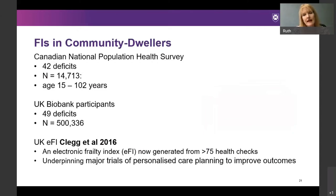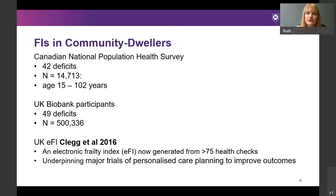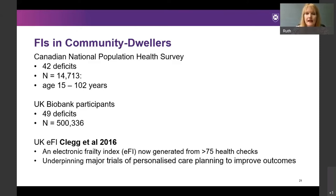Frailty indices have been calculated in millions of people in the community. The Canadian National Population Health Survey recruited nearly 15,000 patients aged 15 to 102, validating it across the adult life course. In the UK Biobank, over half a million people have a frailty index derived from that dataset. Andy Clegg, working in Bradford in the United Kingdom, described how to derive a frailty index from data GPs collect as part of routine health checks, and that is now underpinning major trials of personalised care planning to improve outcomes.